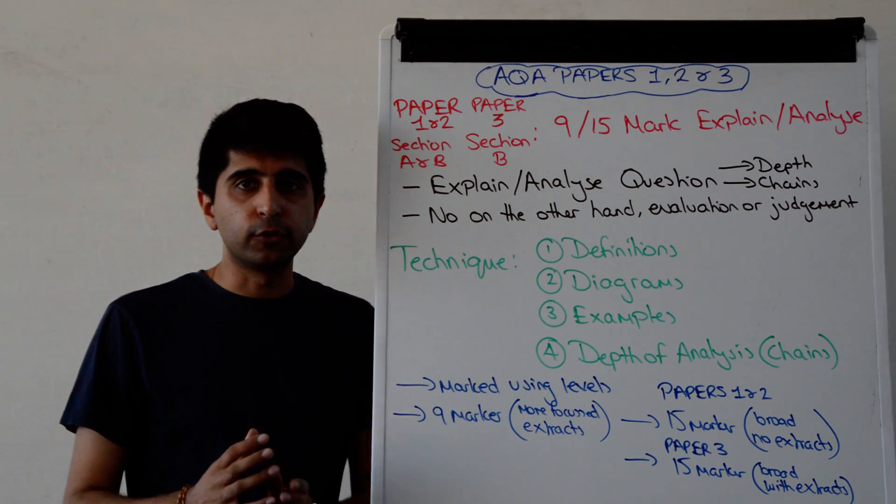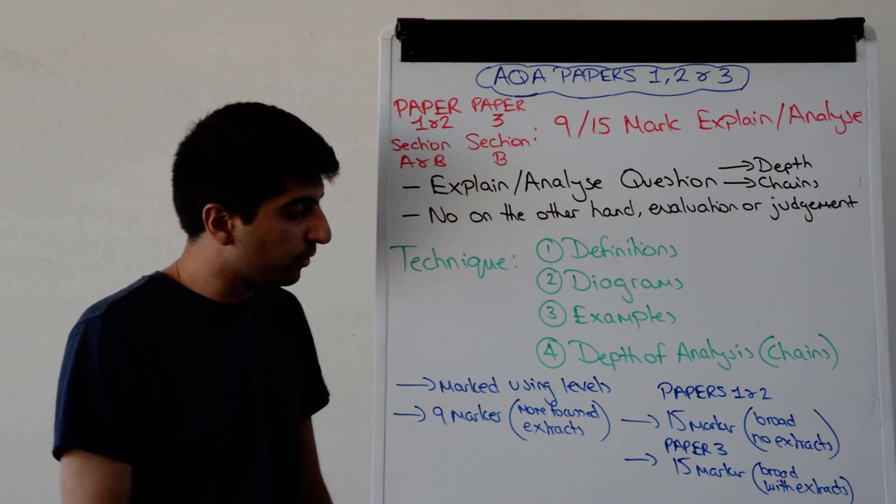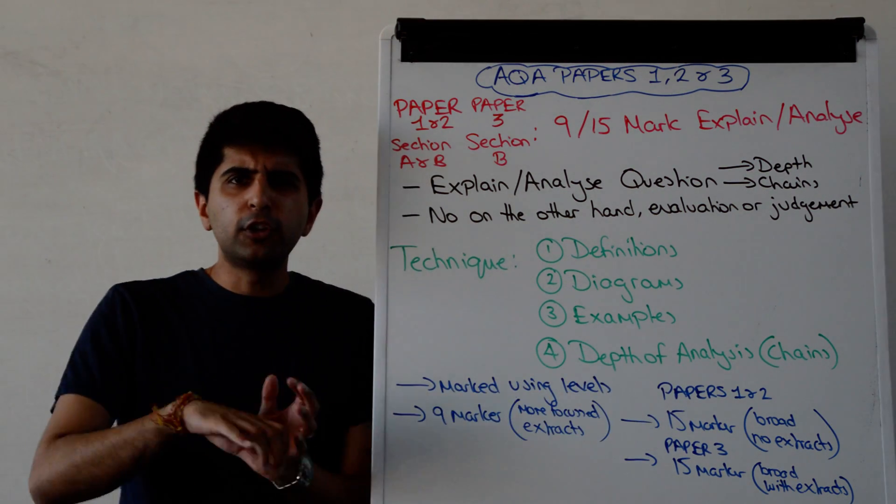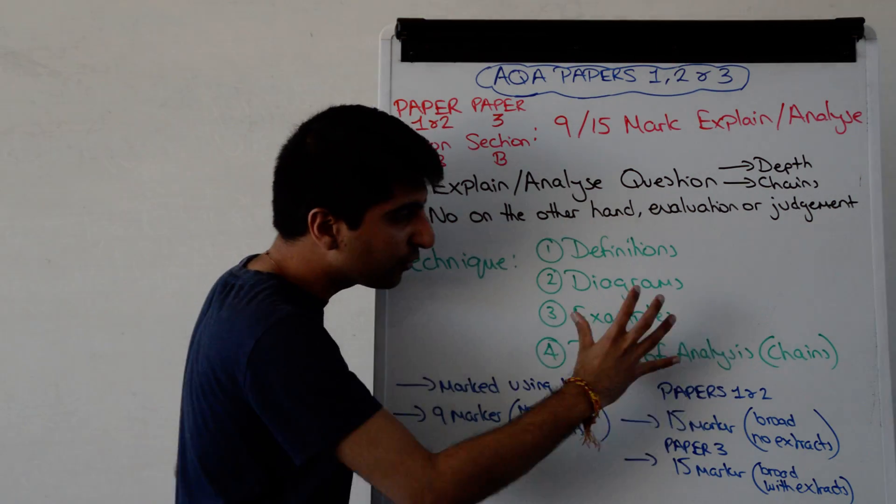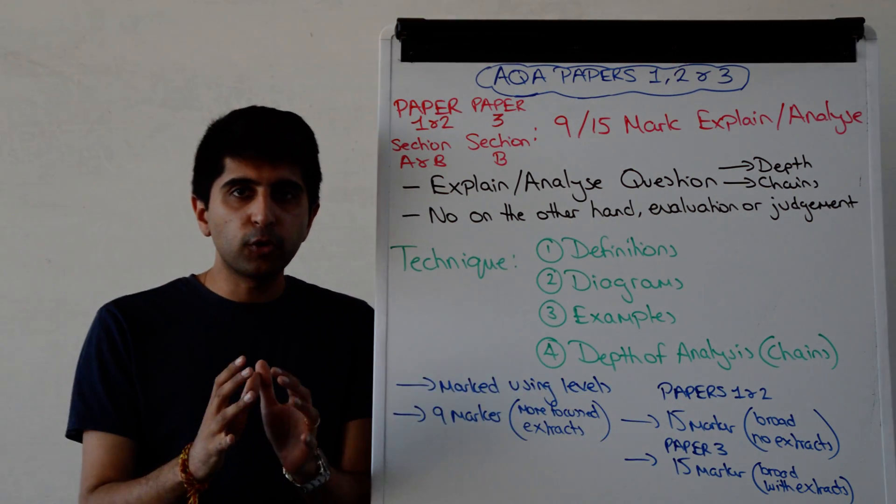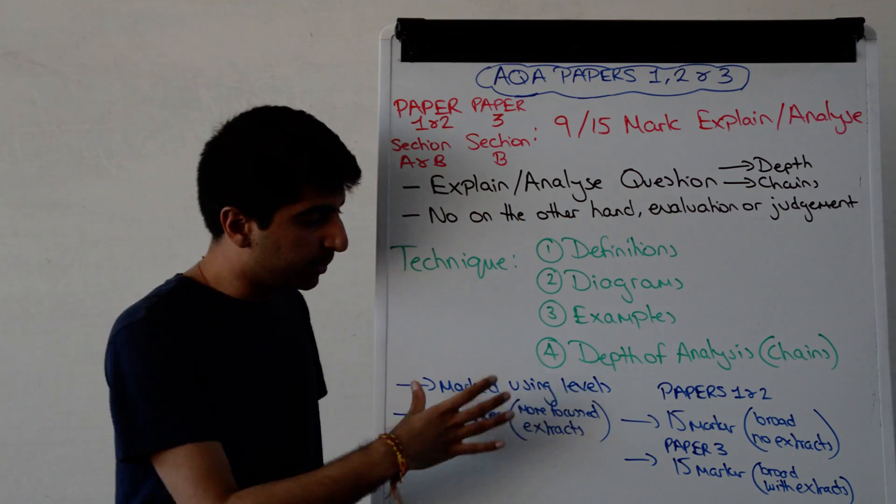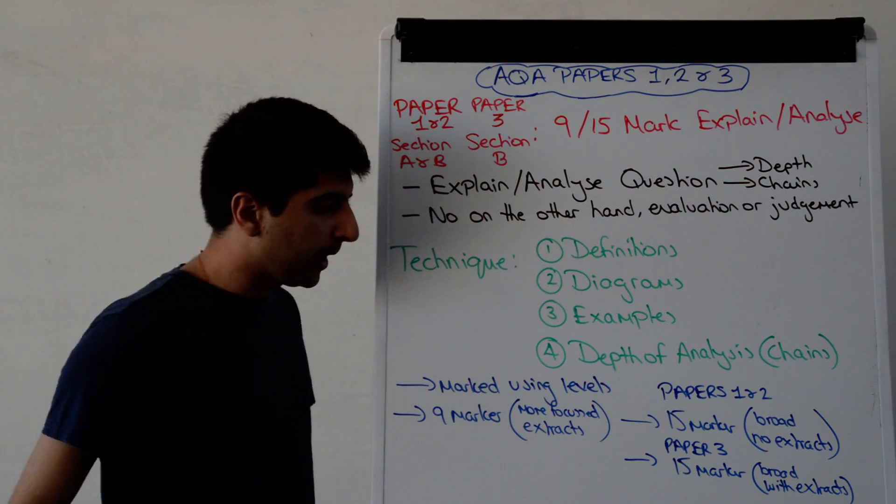These questions are marked using levels, whether it's in Paper 1 and Paper 2 or in Paper 3. It's all marked using levels. Don't worry about what's in the levels, the nitty-gritty. Just know that if you do these four things to the highest possible quality, you'll hit the top marks. You'll be in the top level for all of these questions, regardless of the paper.